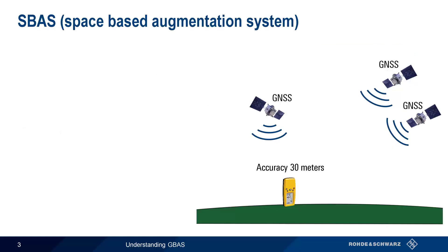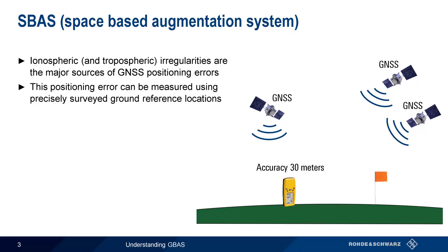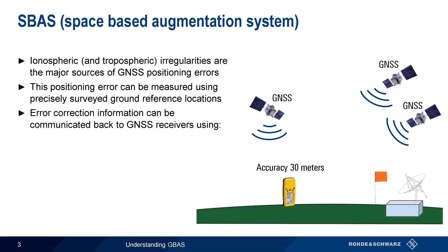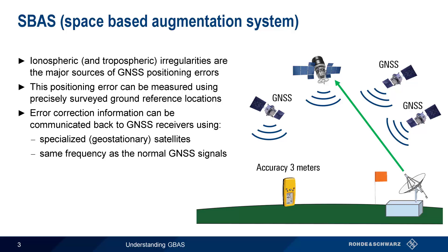The greatest sources of positioning error in GNSS are ionospheric and, to a lesser extent, tropospheric irregularities. We can measure the amount of error by using precisely surveyed ground reference locations — that is, we compare a known, precisely surveyed location to the location calculated from the received GNSS signals. Error correction data can then be computed and sent to special geostationary satellites, which retransmit these corrections using the same frequency as the normal GNSS signals.